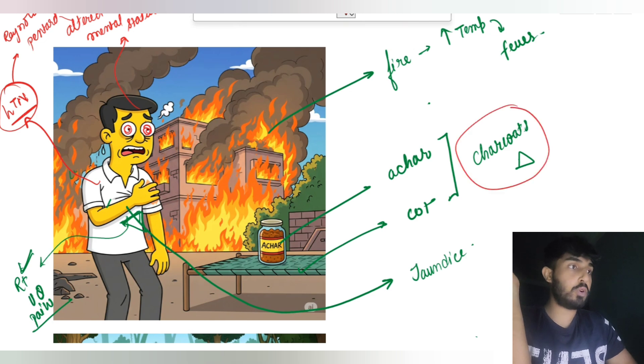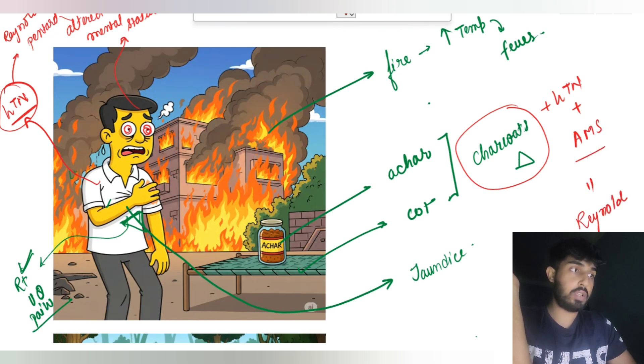So both of them are Reynolds pentad. Okay, let's add this Charcot's triad with hypotension plus altered mental sensation. That would result in the formation of Reynolds pentad.